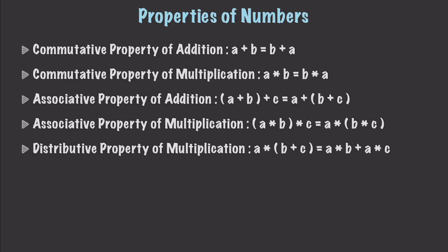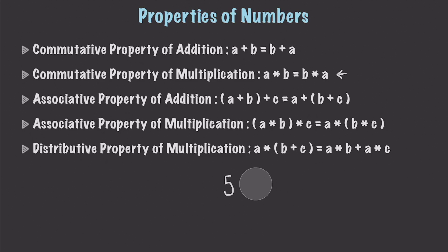Likewise, it does not matter in which order we multiply values. And I'm referring to the commutative property of multiplication here. So once again, we can go and multiply 5 times 6, and we get 30. Or we can go and multiply 6 times 5, and equally we will get a value of 30.